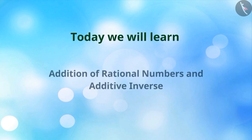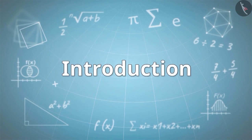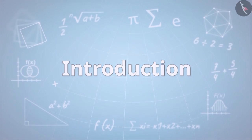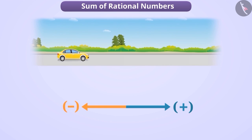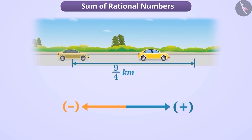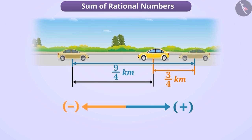Today we will learn the addition of rational numbers and additive inverse. Suppose we represent the distance measured in the right direction by the plus sign and the distance measured in the left direction with the minus sign. Now imagine if a car travels a distance of 9 by 4 km in the right direction and then turns a distance of 3 by 4 km in the left direction — how can the distance from the initial position to the final position be obtained?